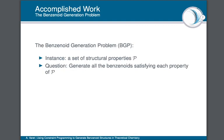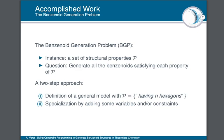Regarding our work, we want to create a CSP model able to solve the Benzenoid Generation Problem (BGP), defined as follows: given a set of structural properties P, generate all the benzenoid structures that satisfy all the properties of P. To do this, we chose a two-step approach: defining a general CSP model able to generate all the non-symmetric benzenoid structures of n hexagons for a given integer n, then adding different blocks of variables and constraints corresponding to additional properties.